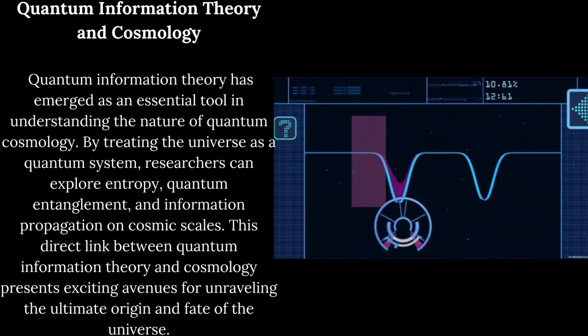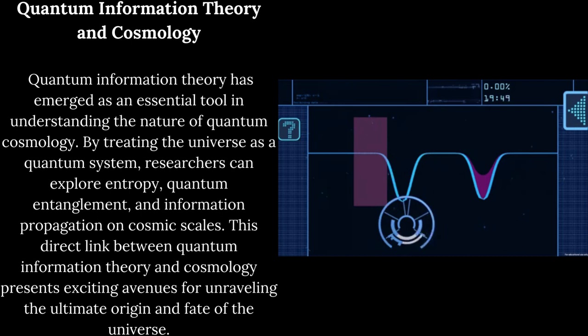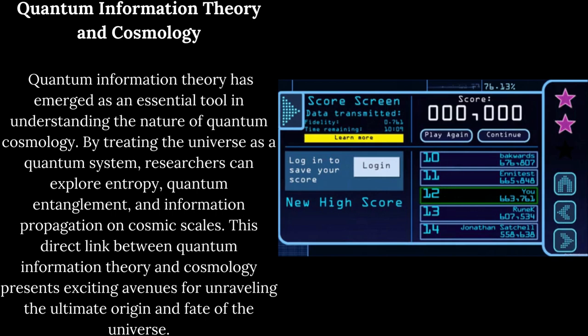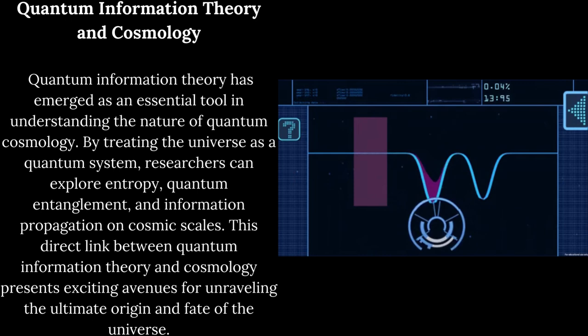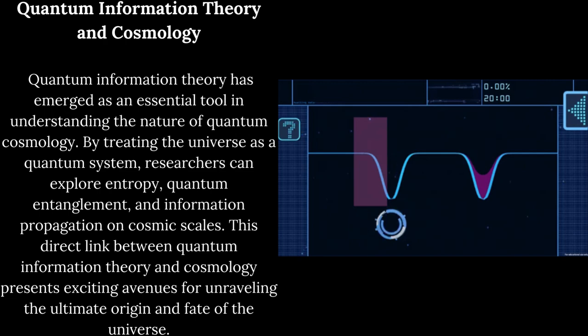Quantum information theory and cosmology. Quantum information theory has emerged as an essential tool in understanding the nature of quantum cosmology. By treating the universe as a quantum system, researchers can explore entropy, quantum entanglement, and information propagation on cosmic scales. This direct link between quantum information theory and cosmology presents exciting avenues for unraveling the ultimate origin and fate of the universe.